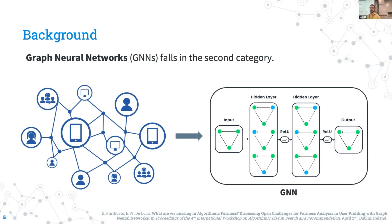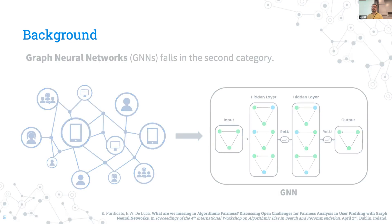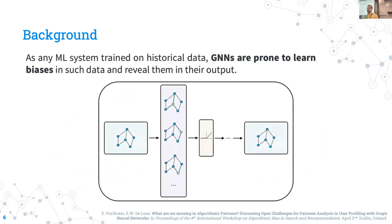Graph neural networks, like any machine learning model trained on historical data, are prone to learn the biases in such data and reveal them in their output. With graph neural networks, we also have the problem of the graph structure, which can enhance this bias in the output because of the topology of the graphs.